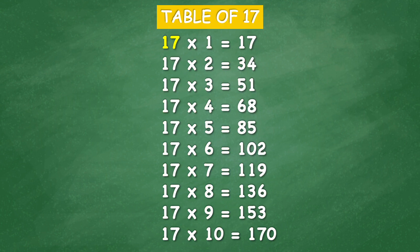Table of 17: 17 times 1 equals 17, 17 times 2 equals 34, 17 times 3 equals 51, 17 times 4 equals 68, 17 times 5 equals 85, 17 times 6 equals 102, 17 times 7 equals 119.